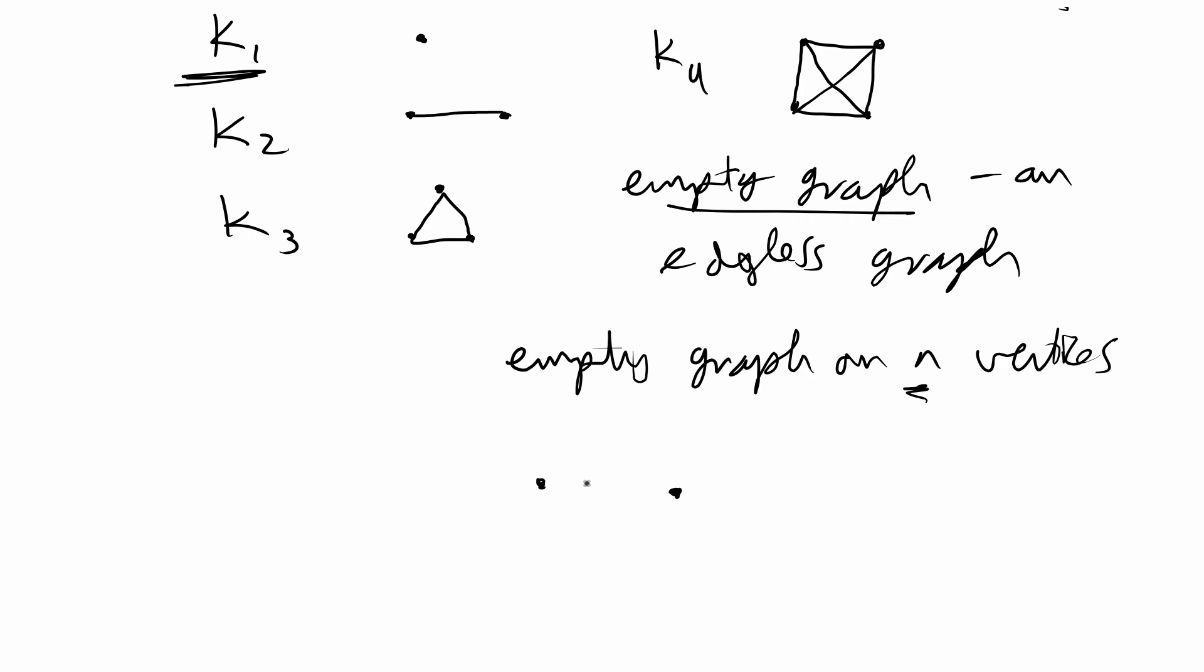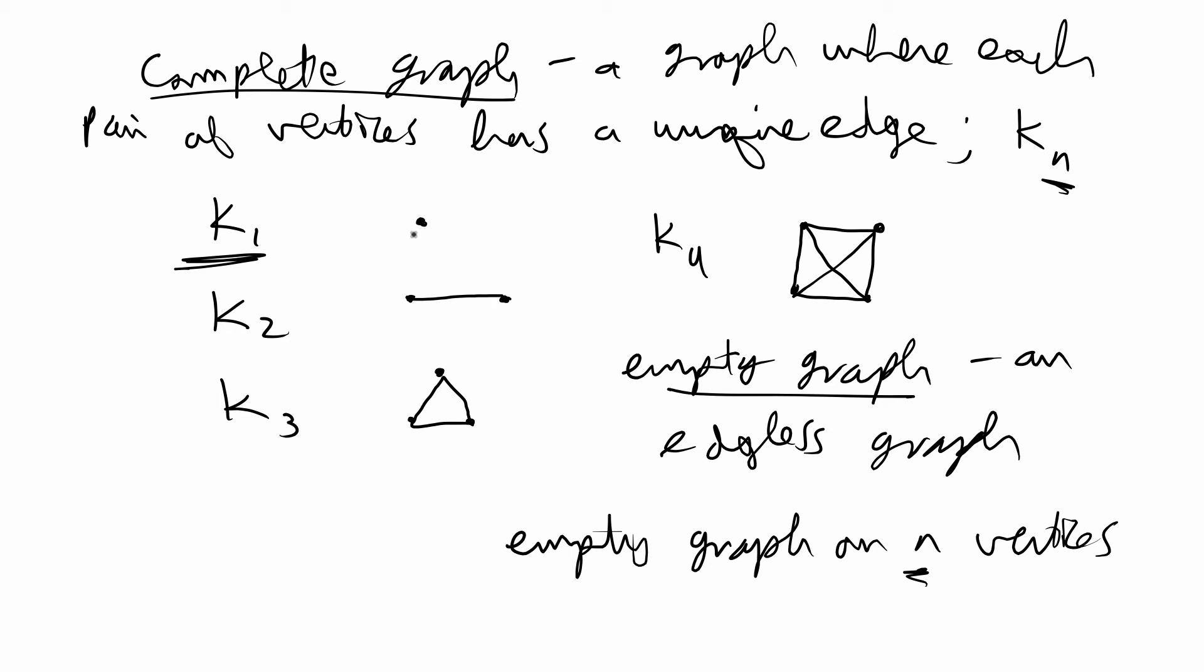This, for example, is an empty graph on two vertices. K1 also has a special name. It's called a singleton graph.